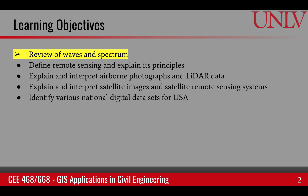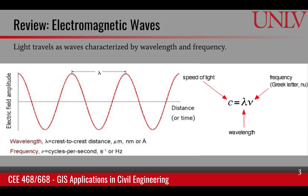But before we do that, let's begin by briefly reviewing the concept of waves and the electromagnetic spectrum. Light travels as electromagnetic waves, and it's characterized by a wavelength and frequency. Wavelength is the distance between two crests or two adjacent troughs, and frequency is how quickly the waves propagate — measured in hertz.